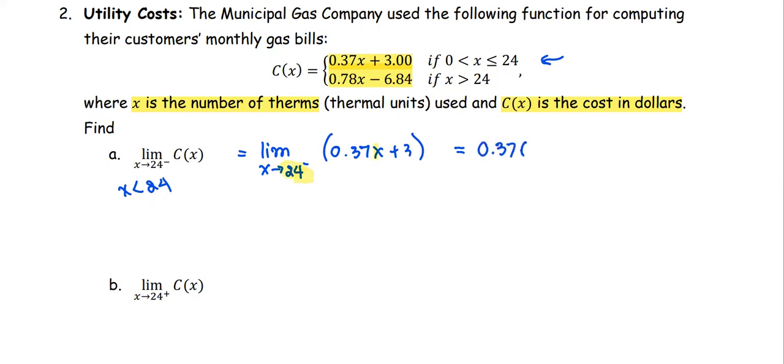0.37 times 24 plus 3, and the value will be $11.88.